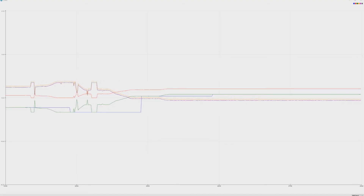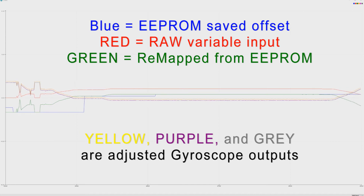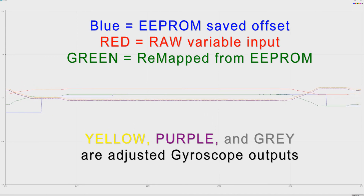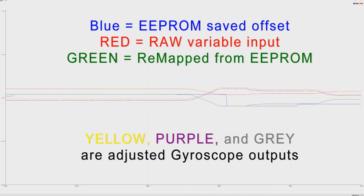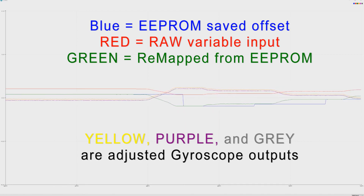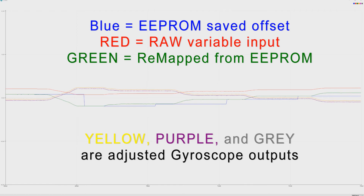Moving on to the full-size graph: the blue is the EEPROM saved offset, the red is the raw input, the green is the remap, and the yellow, purple, and gray are the adjusted gyroscope outputs. You can change these by adjusting the minimum and maximum components inside the EEPROM when it first starts up — you can make those variables bigger or smaller.